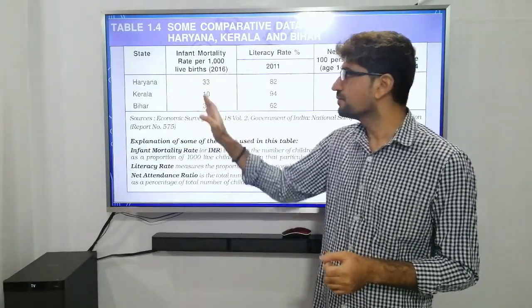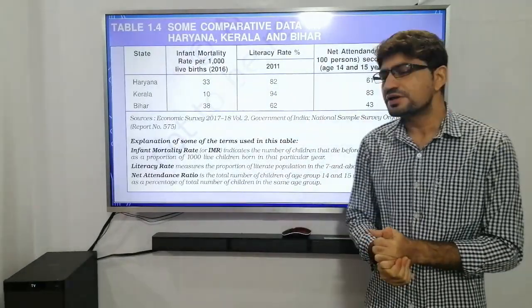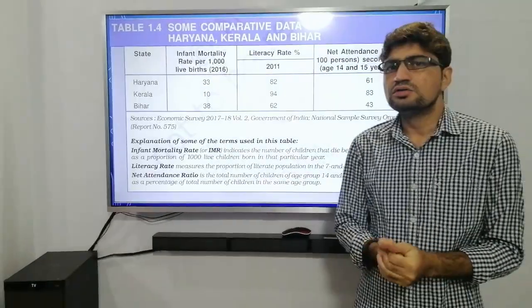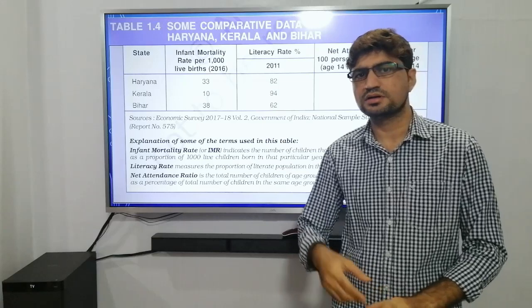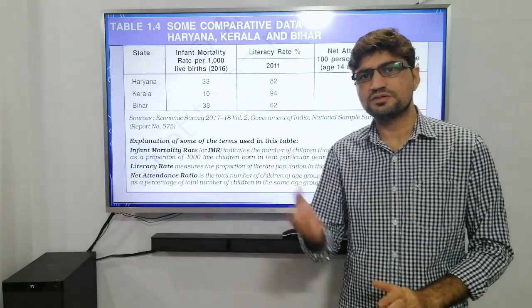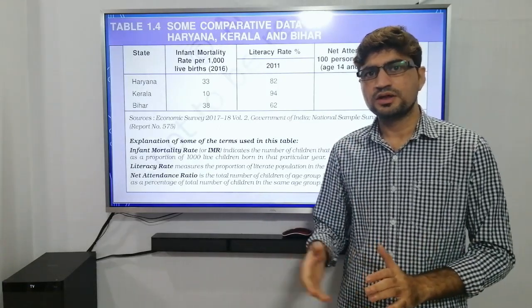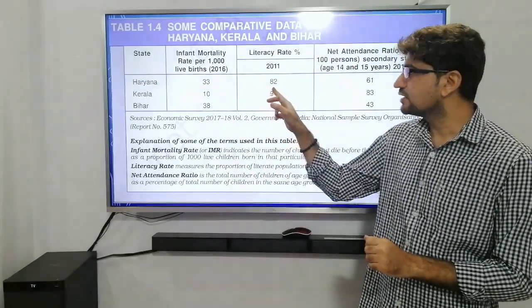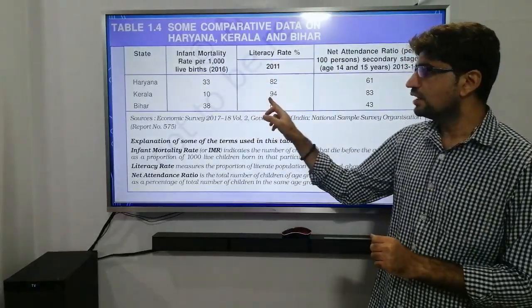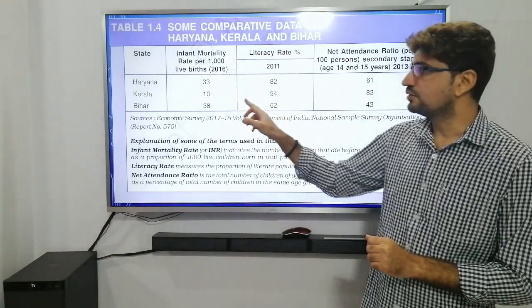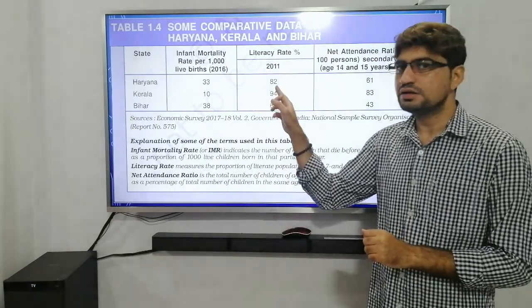Next is literacy rate, which measures the proportion of the literate population. A literate person is defined as a person or child above seven years of age who can read, write, and understand at least one language. The literacy rate in Haryana was 82 percent, in Kerala it was 94 percent, and in Bihar it was 62 percent. So in literacy rate, Kerala again has the best performance at 94 percent.